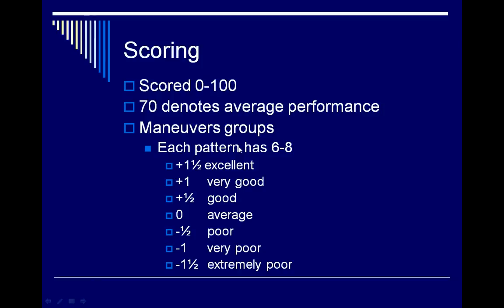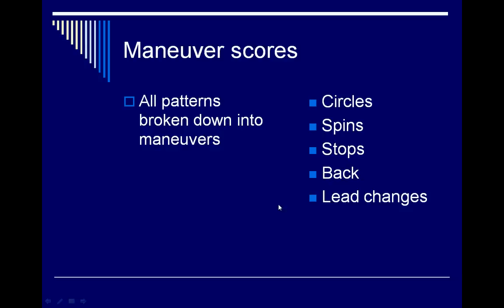Each pattern will have between six and eight maneuver scores. They range from plus one and a half for excellent, plus one to plus one-half for good, zero for average, minus one-half for poor, minus one, and minus one and a half for extremely poor. You assess a maneuver score each and every time a horse completes a maneuver.